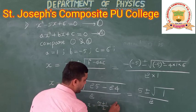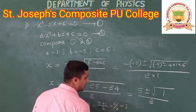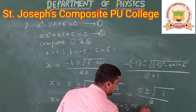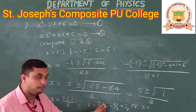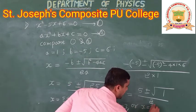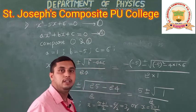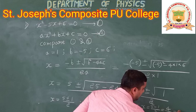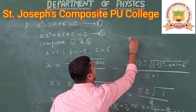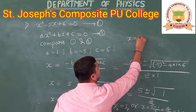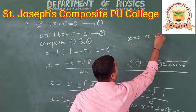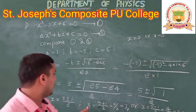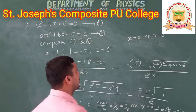Taking the plus sign: 5 + 1 = 6, divided by 2 equals 3. Taking the minus sign: 5 minus 1 equals 4, divided by 2 equals 2. Therefore, either X equals 3 or X equals 2.